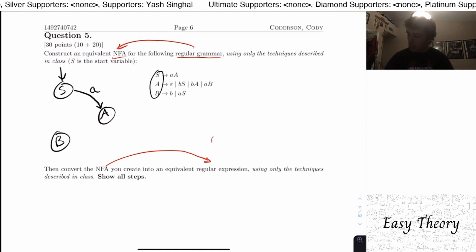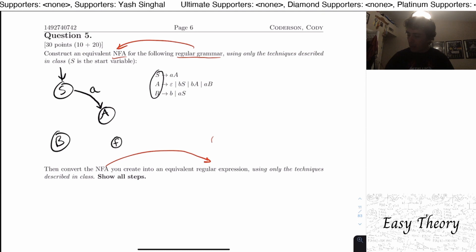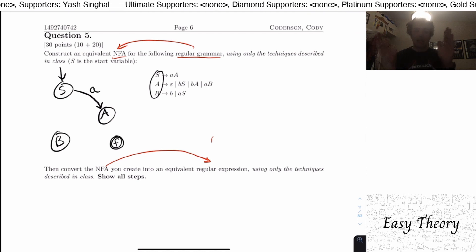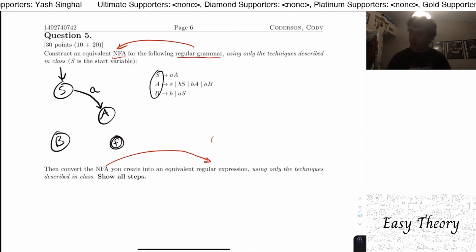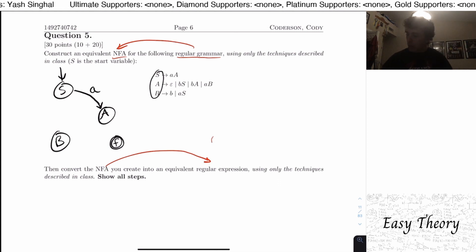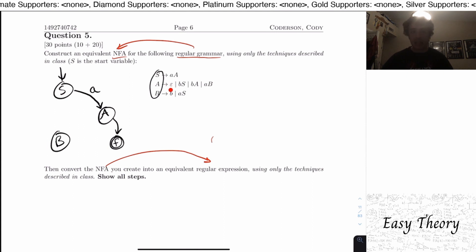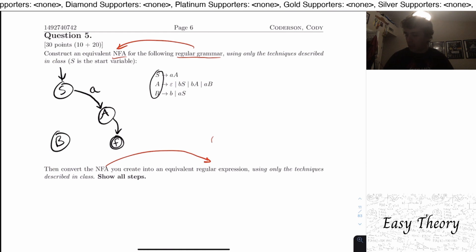What we need to do is make a brand new state that is a final state, because the string has been fully produced. So A goes to that final state on whatever was produced on the right-hand side of this rule, which happens to be epsilon in this case.